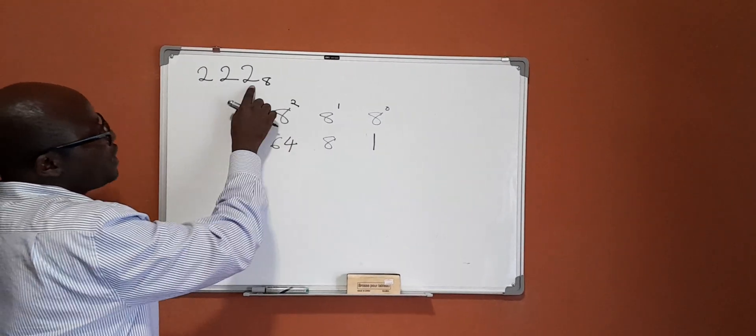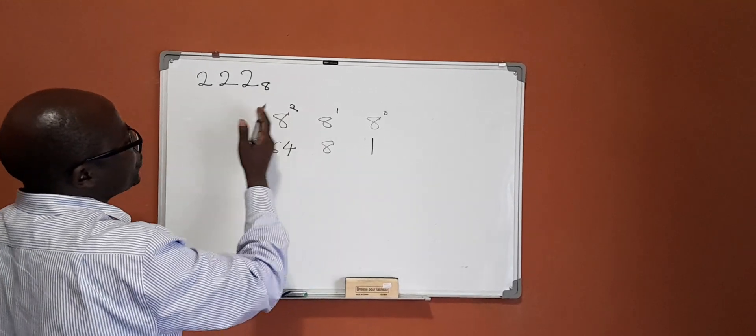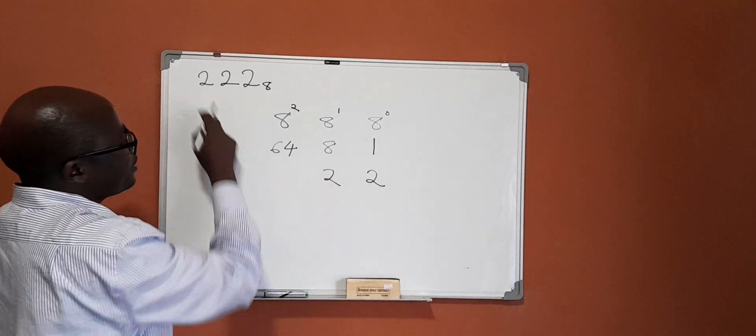Next, we shall put these values according to their positions. Well, they are all 222, so we shall write 2 here, this 2 here, and that 2 there.